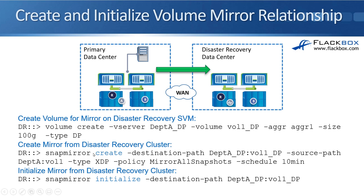After we have created the volume we need to configure the SnapMirror relationship between the source and the destination volume. Again it's all done on the destination side. The command is SnapMirror create. We specify the destination path — the syntax is the name of the SVM, then a colon, then the name of the volume. So for the destination path we're replicating the data into the department_A_DP SVM and the vol1_DP volume. We also specify the source path — we're replicating from the department_A SVM on the source cluster and the volume is vol1.